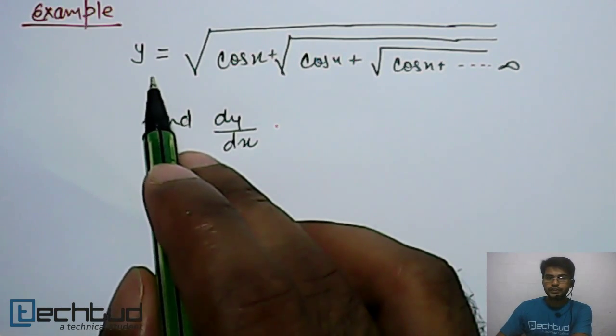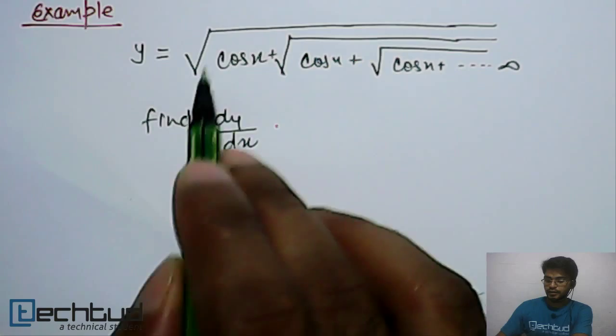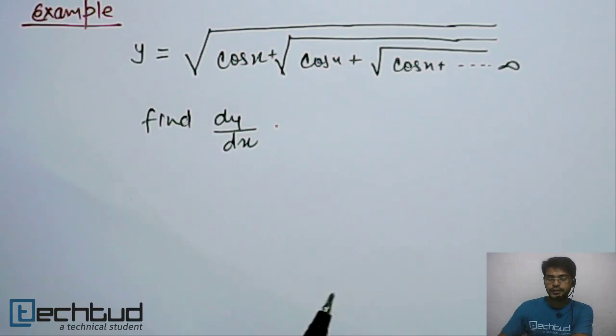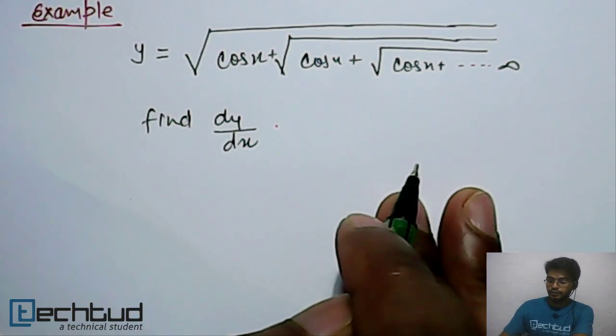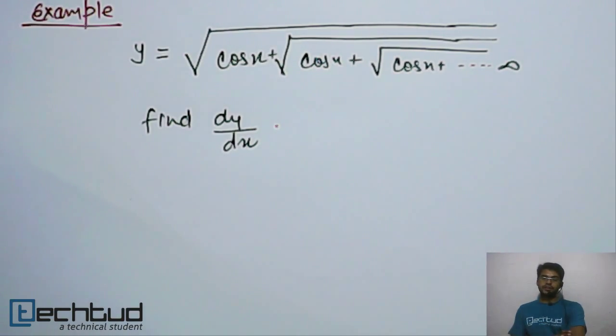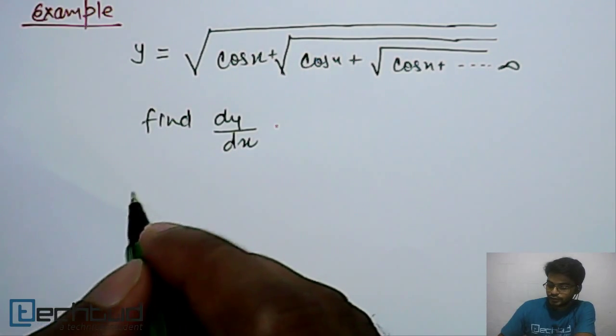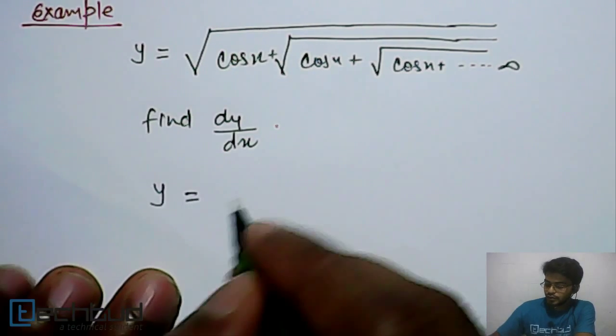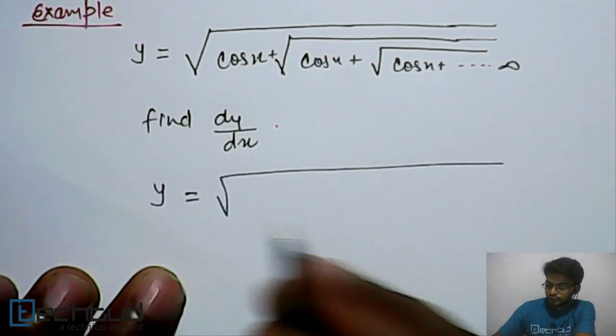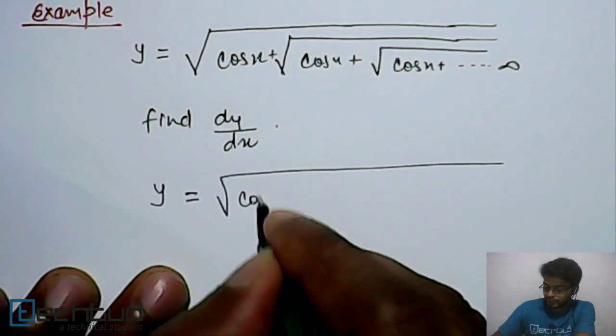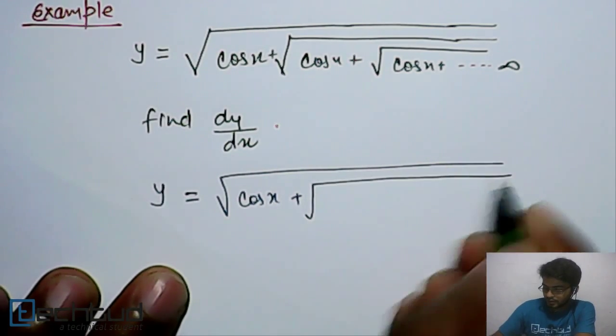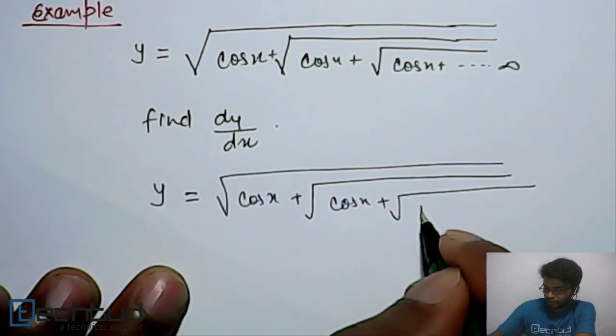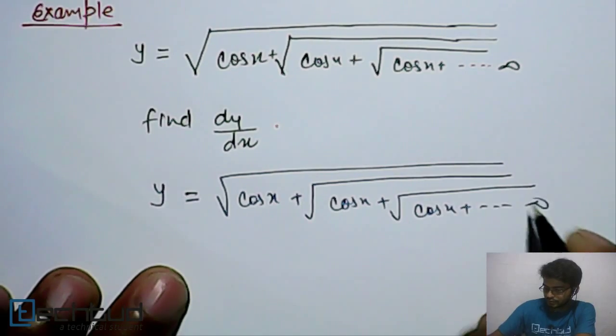This is the given expression: y equals the square root of cos x plus the square root of cos x plus the square root of cos x, and so on. We have to find dy/dx. If you remember solving quadratic equations like this, it's very easy to solve. We can write y equals the square root of cos x plus the square root of cos x plus the square root of cos x, and this continues to infinity.